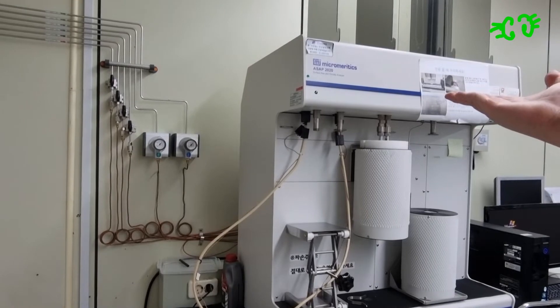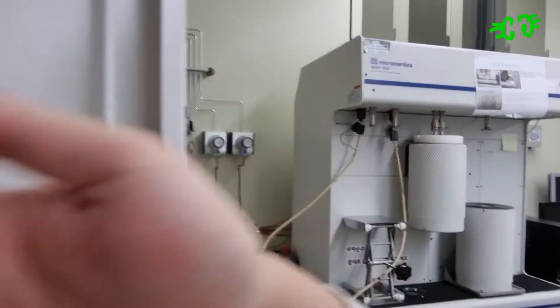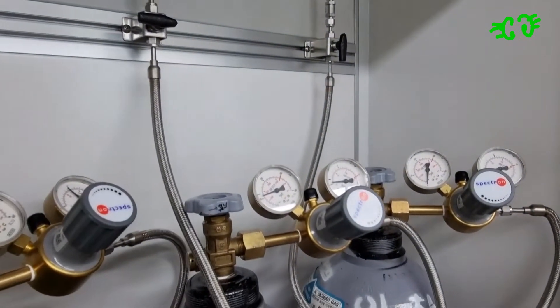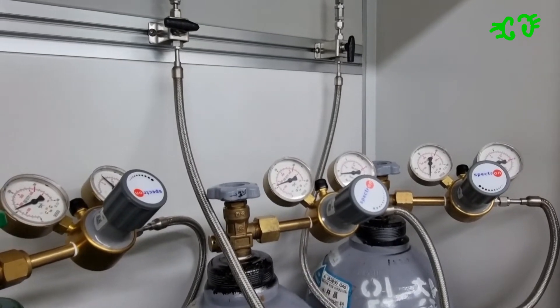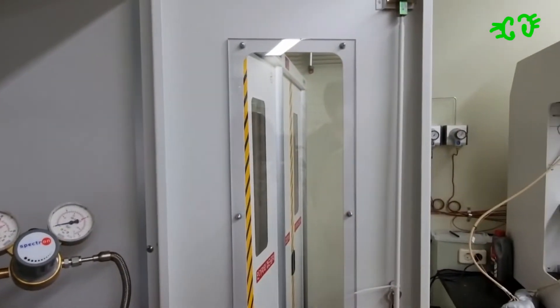If you want to use the surface area and porosity analyzer, you need pure nitrogen gas. I'll be showing you how to open the nitrogen supply to the machine so that you can use it.